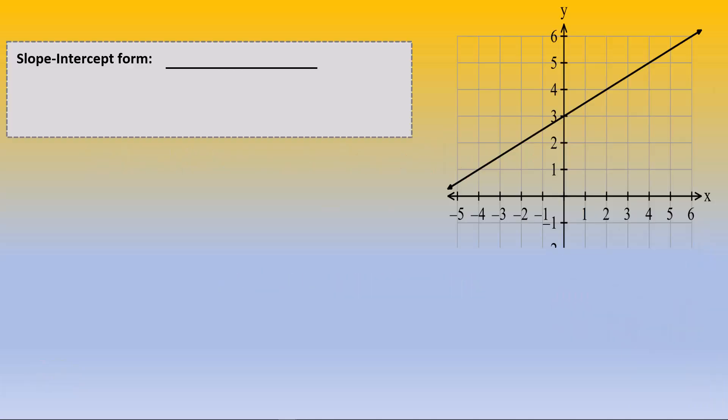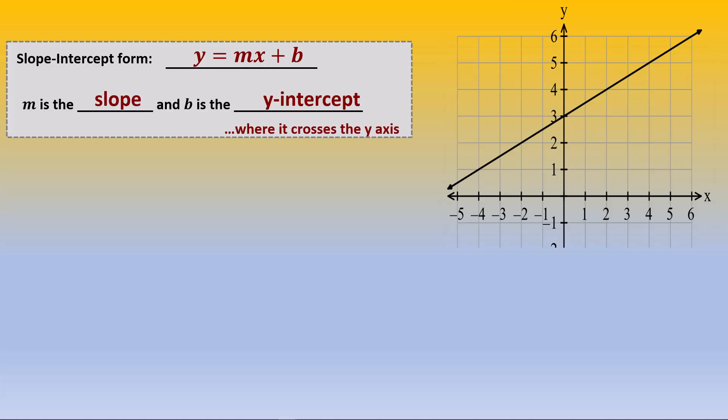The linear slope-intercept form is y equals mx plus b. The y and x are the two variables for the equation, and the variables m and b have special meanings. m is the slope of the line, and b is the y-intercept, where the line crosses or intercepts the y-axis, the actual point being (0, b).